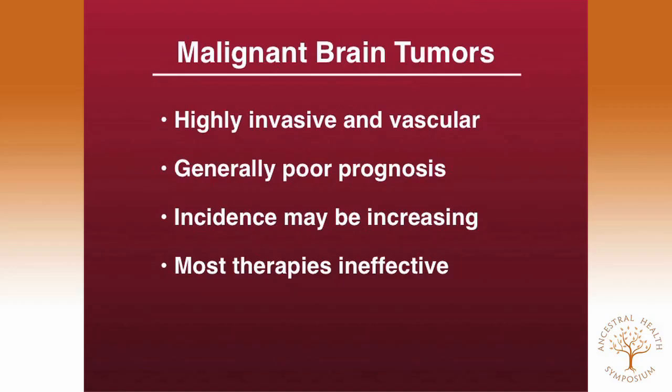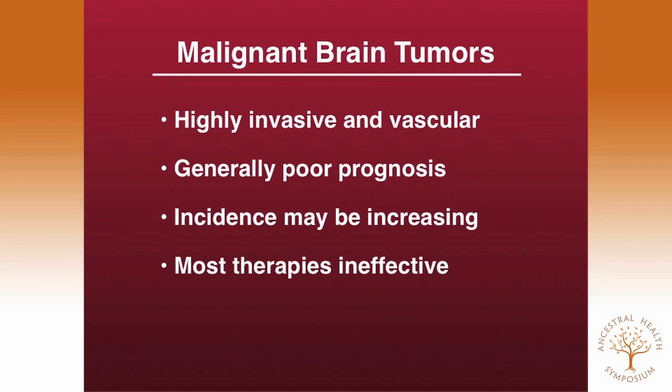Brain cancers are highly invasive and vascularized tumors with generally poor prognosis. Incidents may be increasing through cell phone use for susceptible individuals. Unfortunately, most therapies for brain cancer are ineffective. The two major categories are primary and secondary brain tumors — glioblastoma is a primary brain tumor with very poor five-year survival. About 22.5% of all cancer deaths come from metastasis to the brain. We have used calorie restriction and restricted ketogenic diets as a metabolic approach to cancer management.